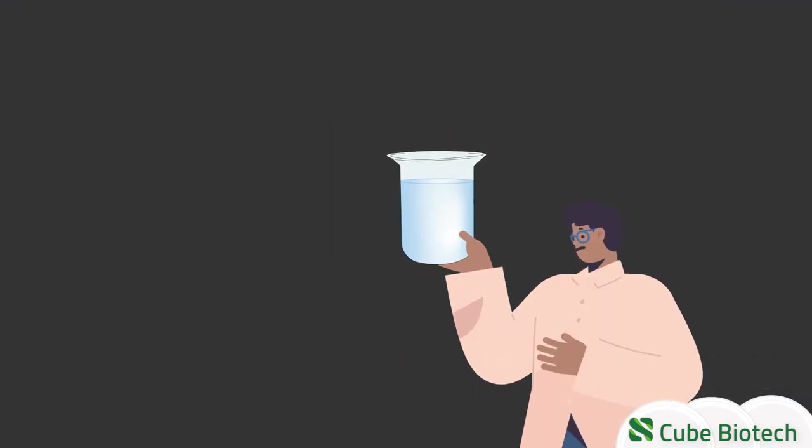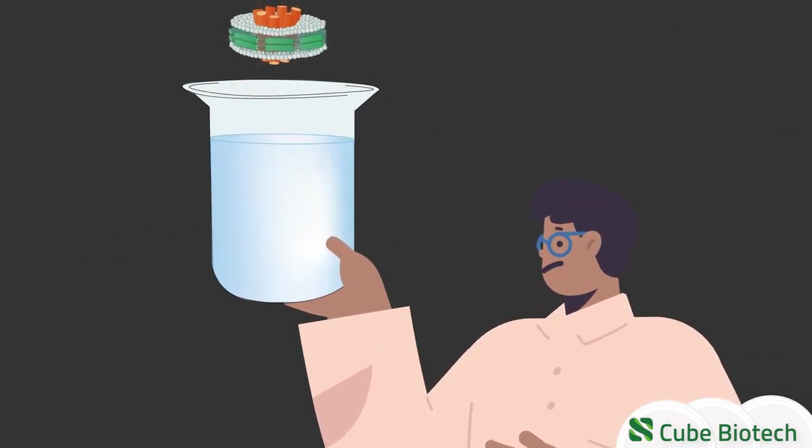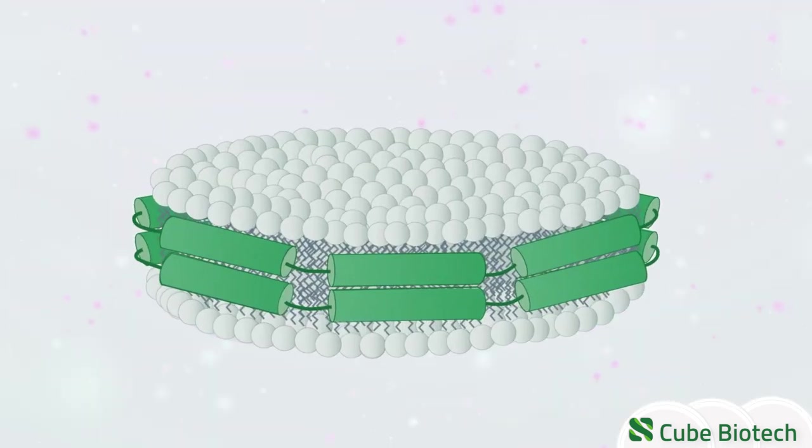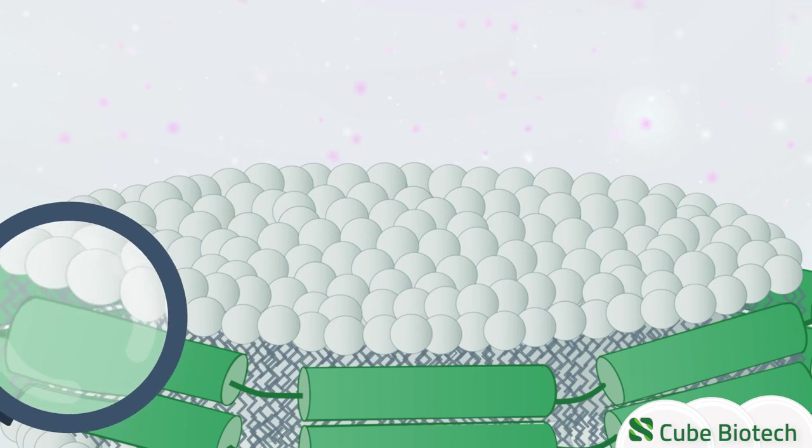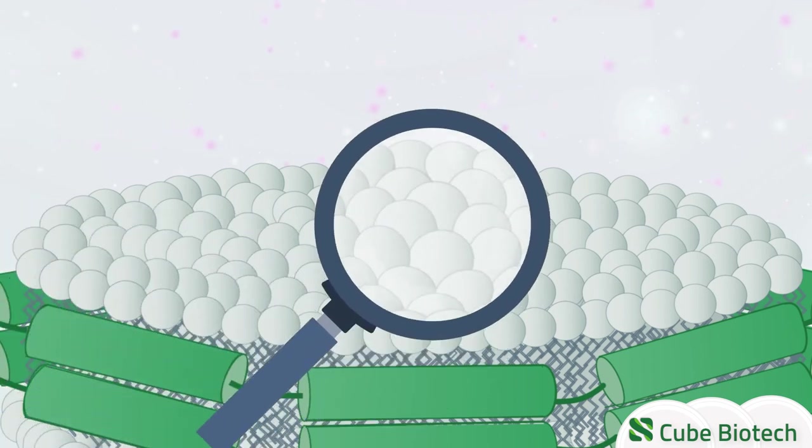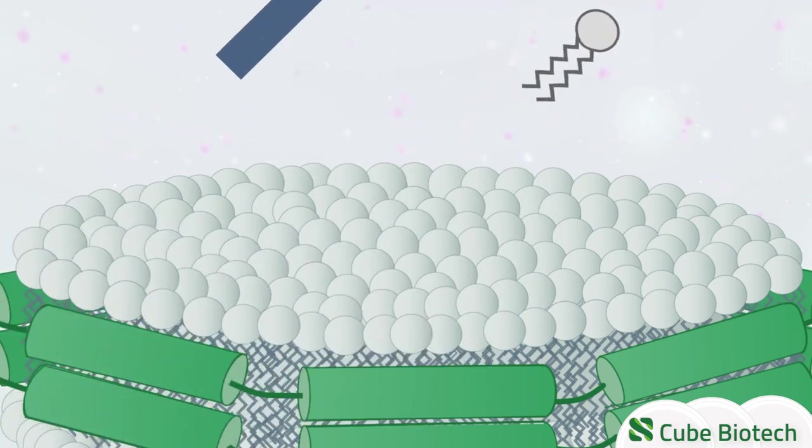This enables membrane proteins to maintain their folding after being removed from the cell membrane. Some nanodiscs also contain a core of phospholipids, which can either be of artificial origin or originate from the cell membrane itself.